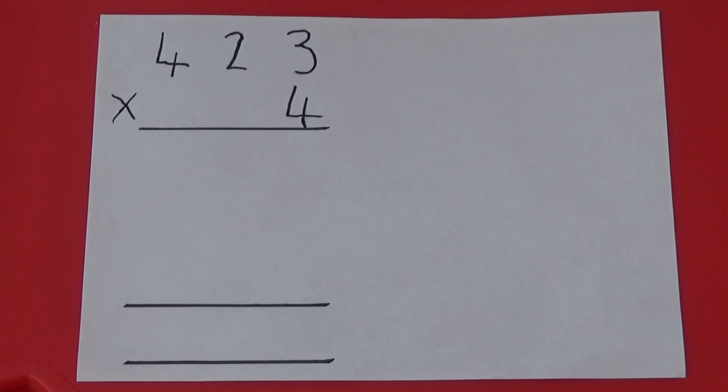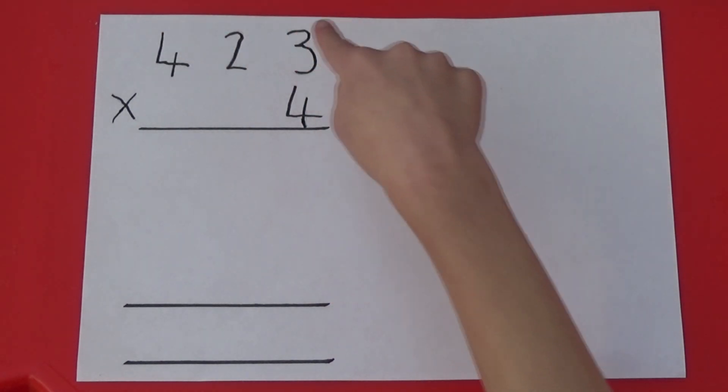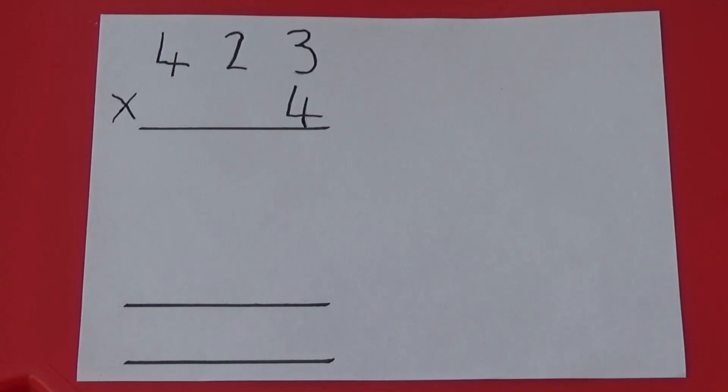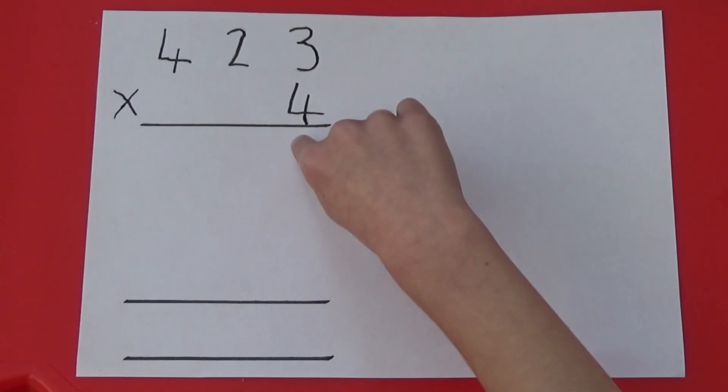With grid method, we multiply the hundreds, then the tens and then the ones by 4. This time, I'm going to start with the ones. I'm going to work out 3 multiplied by 4, 20 multiplied by 4 and 400 multiplied by 4.